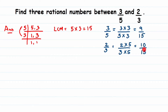Now we have 9/15 and 10/15. Between these two we have to find three rational numbers, but if you observe carefully, between 9/15 and 10/15 we cannot find many numbers — there is no number between them because after 9, the immediately next integer is 10. So in such a case, when there is no gap between the two rational numbers, you have to check how many rational numbers are being asked.